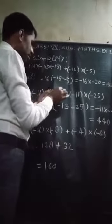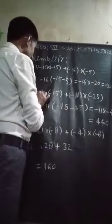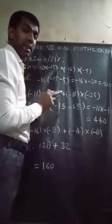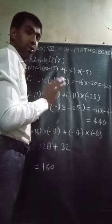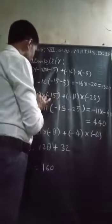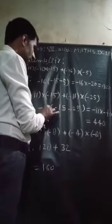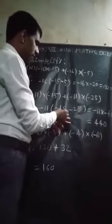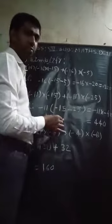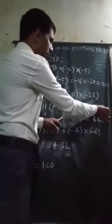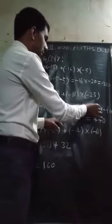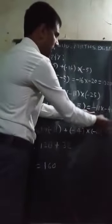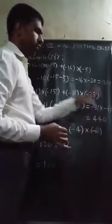Here, inside this numerical also, minus 11 comes twice. So, minus 11 will be common, and minus 15 and minus 25 will be added. Minus 15 and minus 25 will give minus 40. And minus 11 multiplied by minus 40: 11 into 40 gives 440.